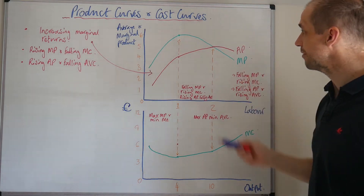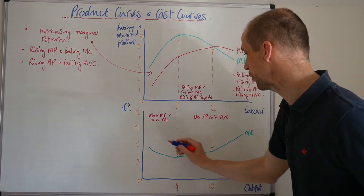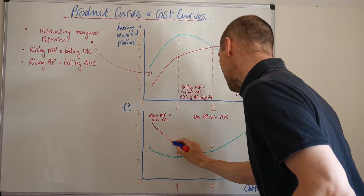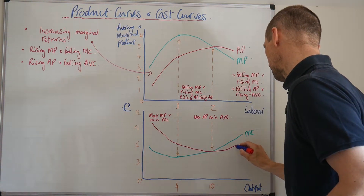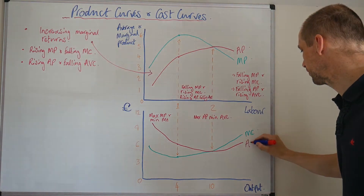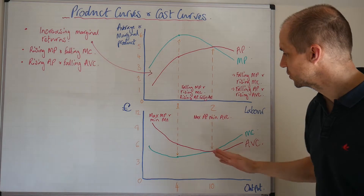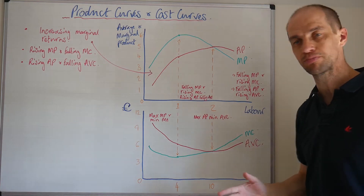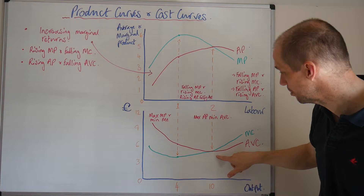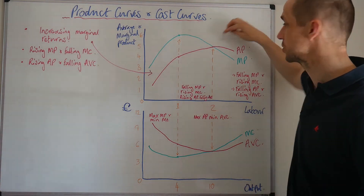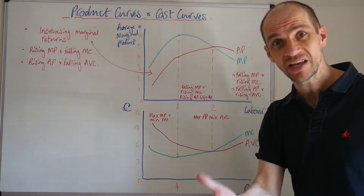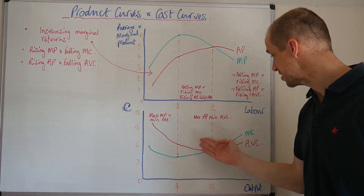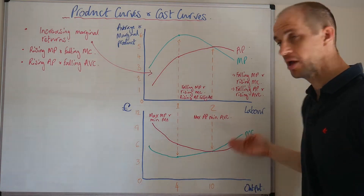Now if we look at our average variable cost, it will look something like this. We see the maximum average product at this point, and that is the minimum level for our average variable cost — because that is when your average product is at its highest. So it stands to reason that your average variable cost must be at its lowest.